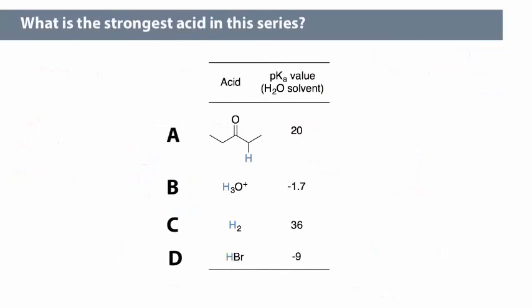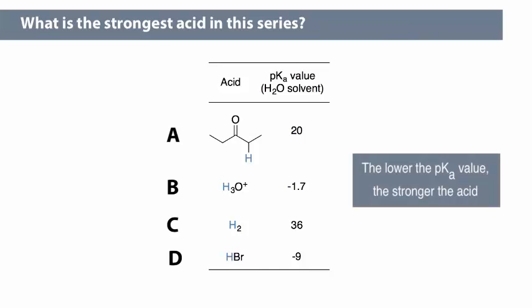What is the strongest acid in this series? The lower the pKa, the stronger the acid, and so the strongest acid in this series is the HBr.